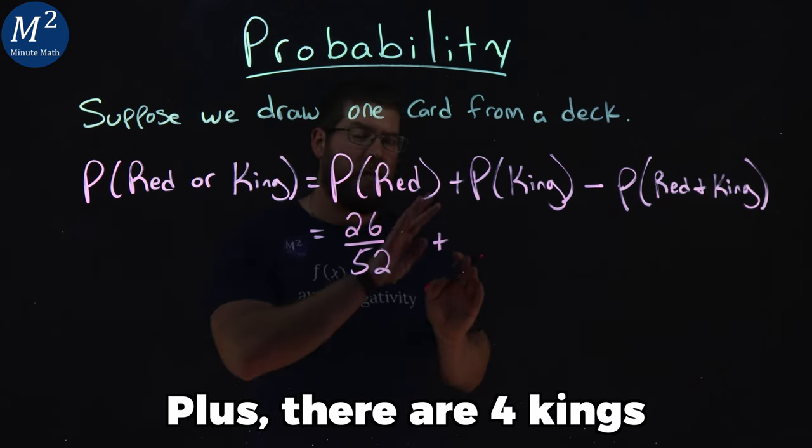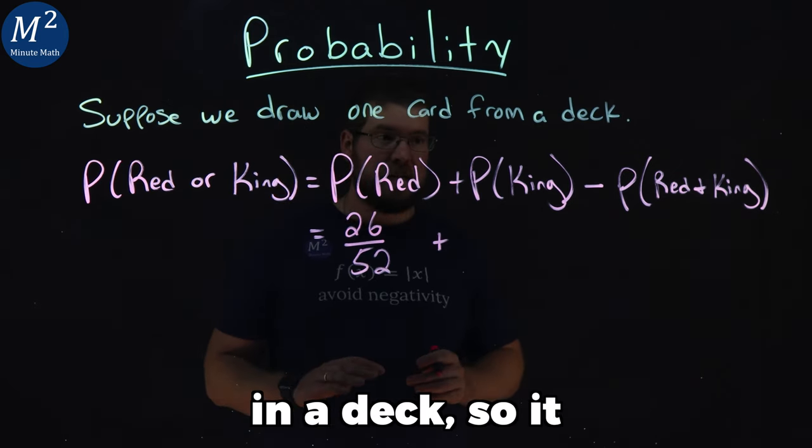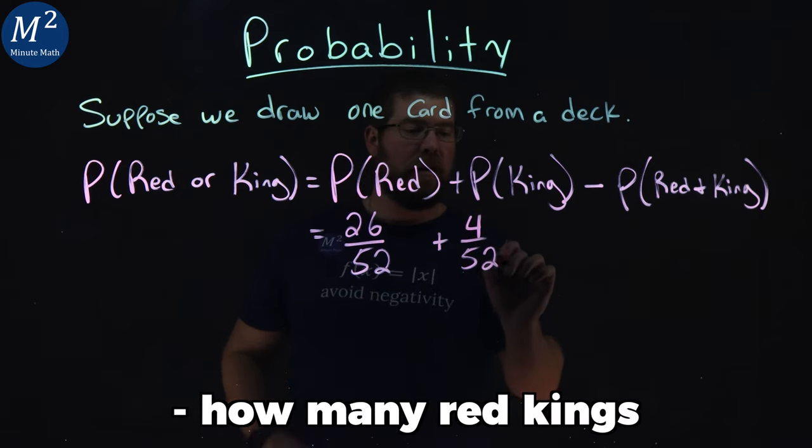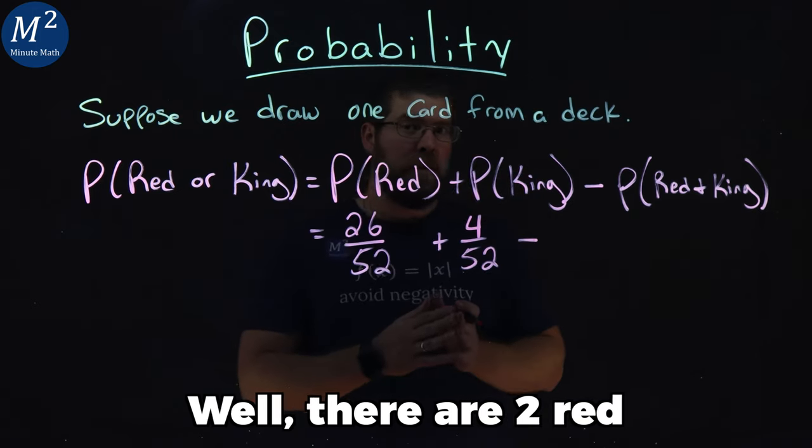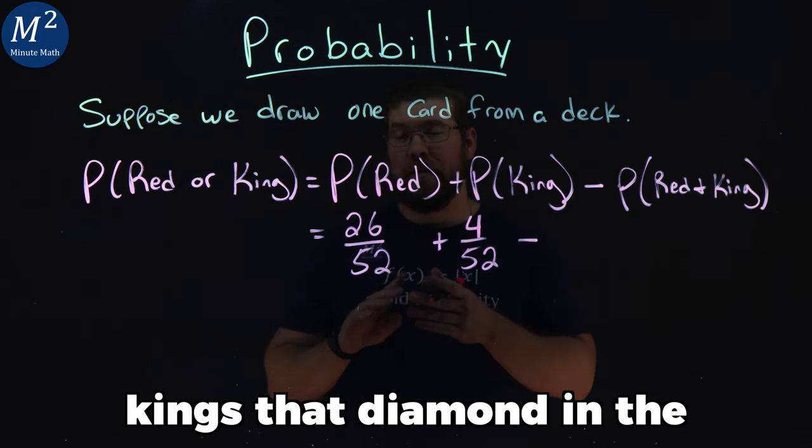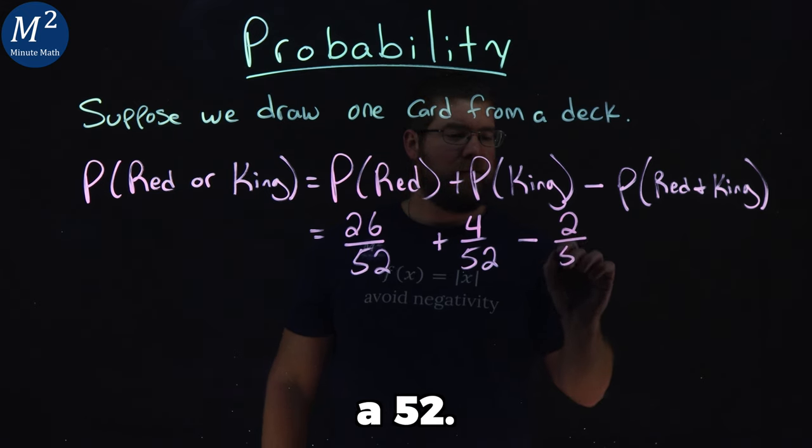Plus there are four kings in a deck, so it would be 4 out of 52, minus how many red kings do we have? Well there are two red kings, the diamond and the heart, so minus 2 out of 52.